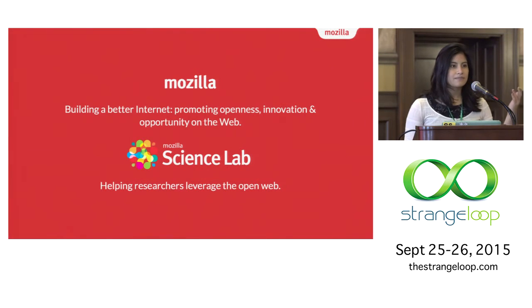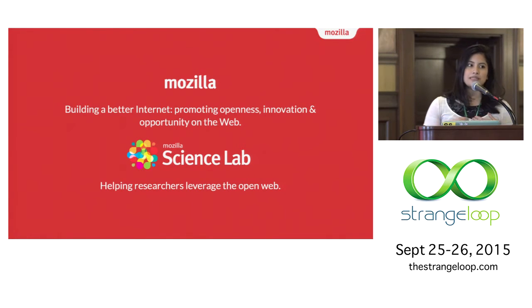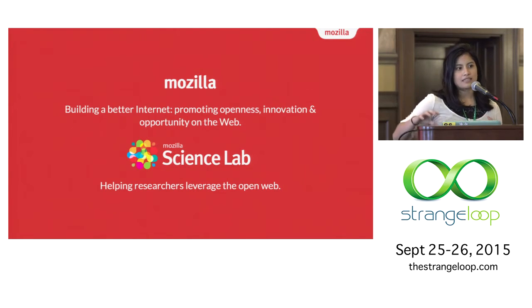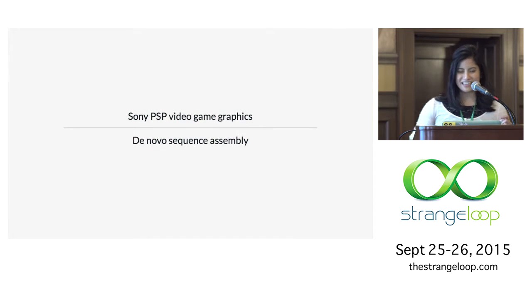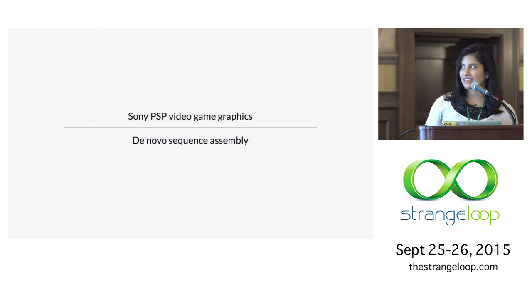I work at Mozilla, and we're building a better internet — promoting openness, innovation and opportunity on the web. I came to Mozilla because I was really interested in how they were applying this mission to a very specific area of practice with science. They have a lot of really interesting problems in science. Here's a quiz: who can tell me what's similar between Sony PSP video game graphics and de novo sequence assembly?